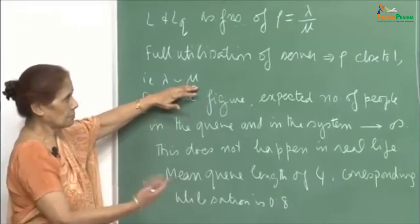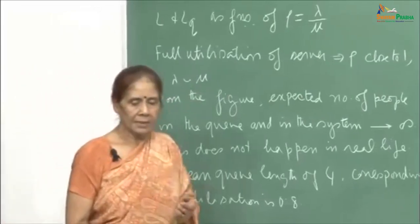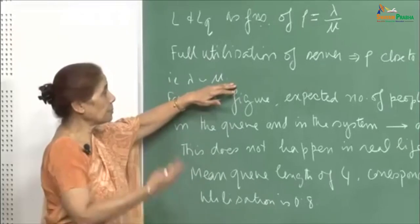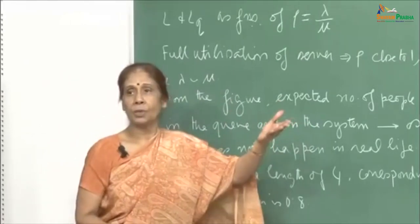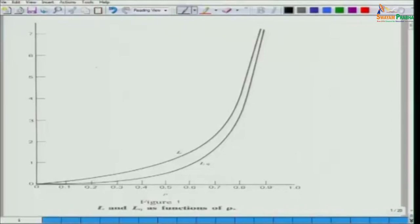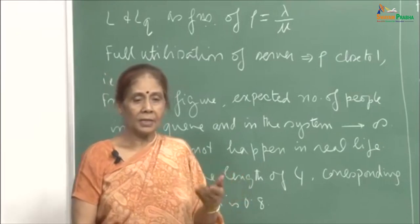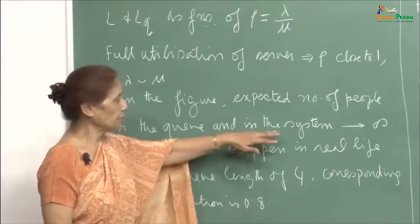When ρ is close to 1, that means λ is close to μ — the mean arrival rate and the mean service rate are almost the same. In that case, the expected number of people in the system and in the queue will go to infinity. These are mean values: L is the average number of people in the system and L-queue is the average number in the queue — both going to infinity.